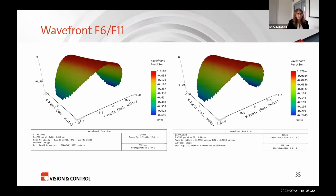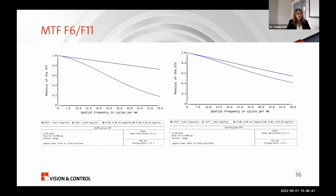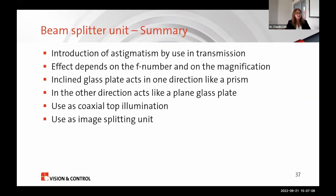Looking at the wavefront and MTF: at F/6 you can clearly see the astigmatism — one direction is diffraction-limited and the other is quite degraded. Stopping down reduces this effect significantly. To summarize: the beam splitter unit introduces astigmatism when used in transmission, and the effect depends strongly on the F-number and also on the magnification — the higher the magnification, the larger the effect. An inclined glass plate acts as a prism in one direction and as a plain glass plate in the other.